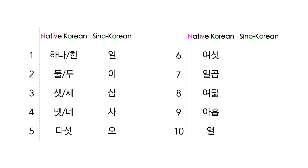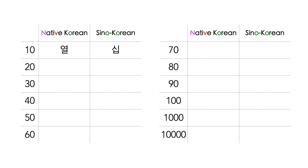Sino-Korean numbers are based on Chinese characters. Numbers 1 through 5 are read 일, 이, 삼, 사, 오. 6 through 10 is 육, 칠, 팔, 구, 십.